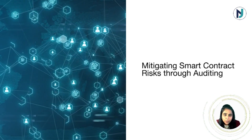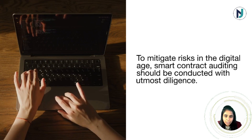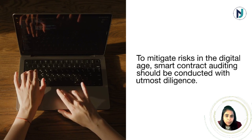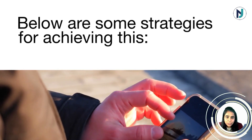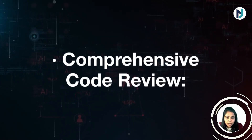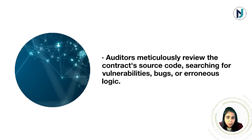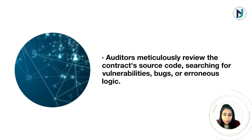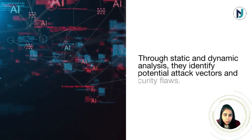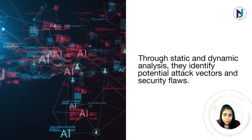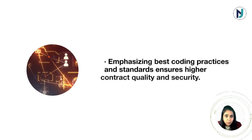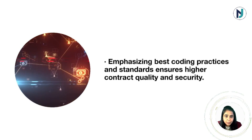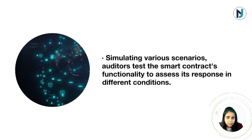To mitigate risk in the digital age, smart contract auditing should be conducted with utmost diligence. One key strategy is comprehensive code review: auditors meticulously review the contract's source code, searching for vulnerabilities, bugs, or erroneous logic. Through static and dynamic analysis, they identify potential attack vectors and security flaws, emphasizing best coding practices and standards to ensure high contract quality and security.